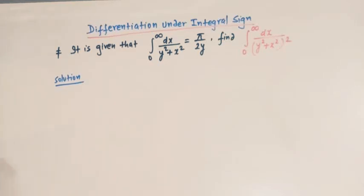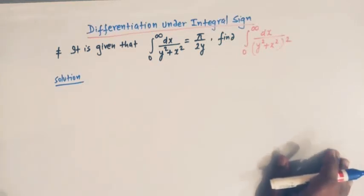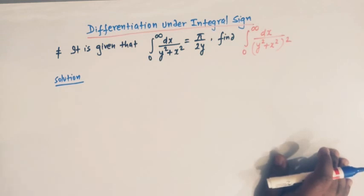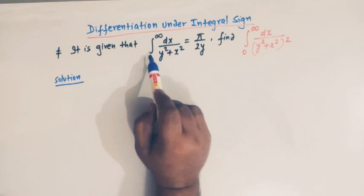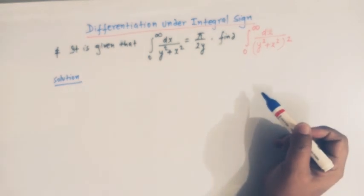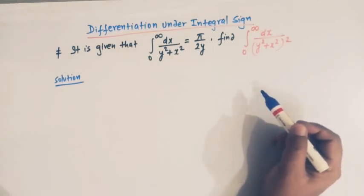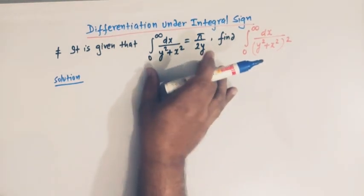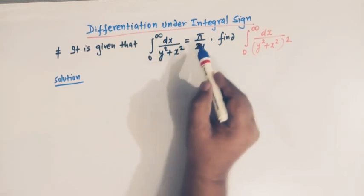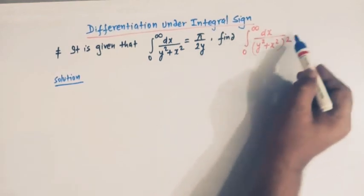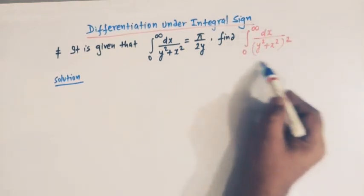Hello viewers, in today's lecture we are going to solve one problem related to differentiation under integral sign. We will use the concept of how to differentiate a function inside the integral sign to obtain the value of some useful integrals. We are given the expression: integral from 0 to infinity of dx over (y squared plus x squared) equals pi over 2y, and we have to find the value of this integral.